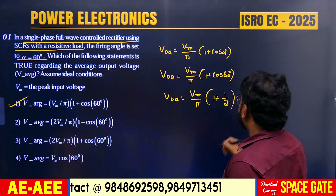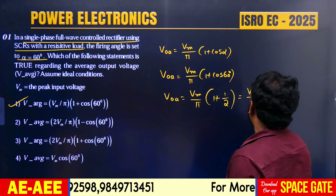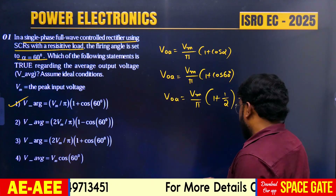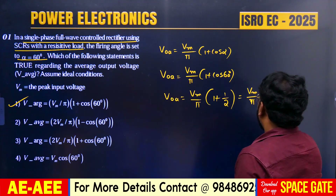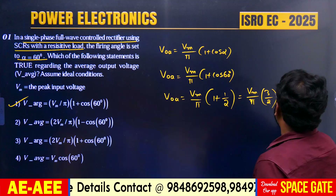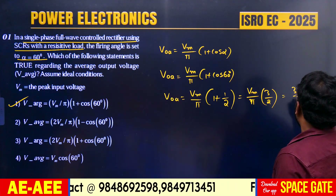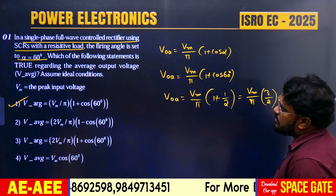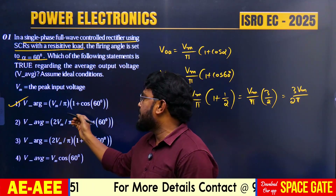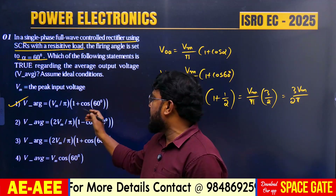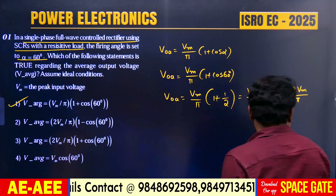Evaluating numerically: V0_avg = (Vm/π)(1 + cos 60°) = (Vm/π)(1 + 1/2) = (Vm/π)(3/2) = 3Vm/(2π). This confirms the answer. The direct formula gives V_average = (Vm/π)(1 + cos 60°), which is Option 1.